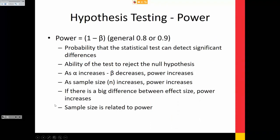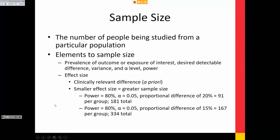Power is one minus beta — it's the probability that the statistical test can detect a significant difference. As alpha increases, beta decreases and power increases. Sample size elements include prevalence of the outcome, desired detectable difference, variance, alpha level, and power. Smaller effect size requires greater sample size. If your alpha and power are the same but your effect size is 20% versus 15%, you go from 181 patients total to 334 — you can see how small sample sizes make it very difficult to reach a p-value of less than 0.05.